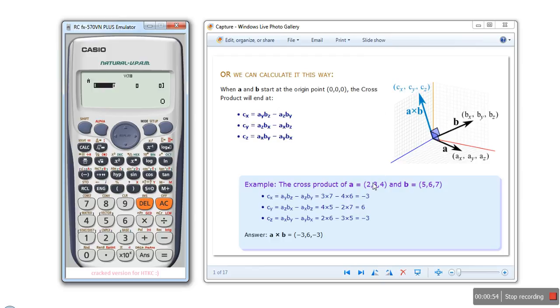Here we will enter our first vector: two, three, and four. We are done with the first vector. We will press the AC key - pressing AC key will save your vector.